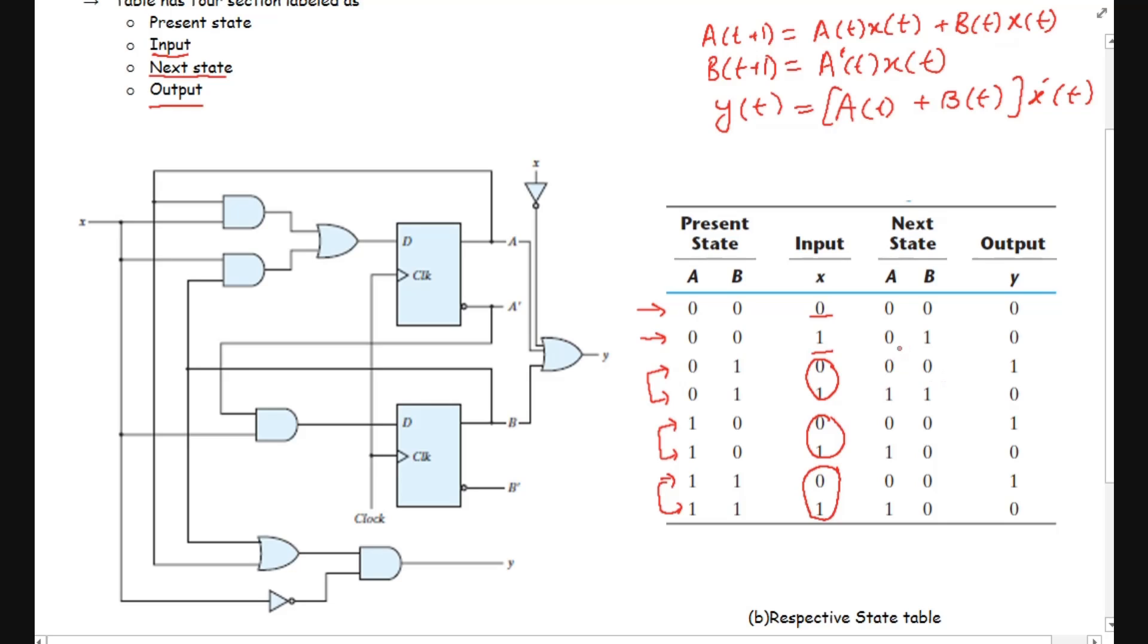This was all about the state table which enumerates or combines the inputs, outputs and the flip flop states. Thank you.